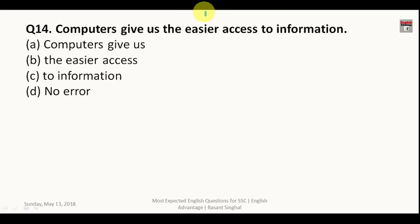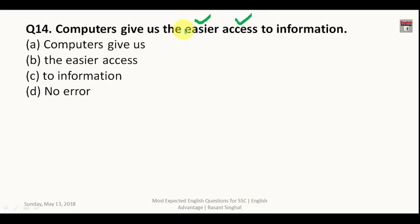Question fourteen: 'Computers gives us the easier access to information.' The noun is 'access' and 'easier' is an adjective. Before the adjective 'easier' you need the article 'an' — so it should be 'an easier access'. The answer is B.